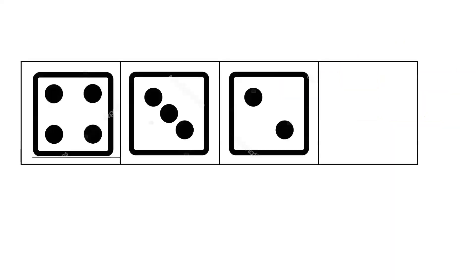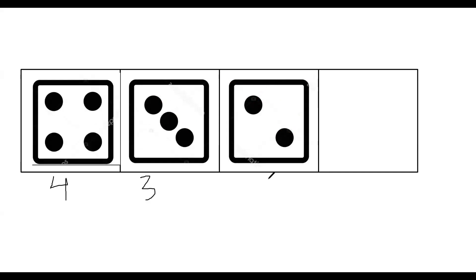Now let us see this new kind of pattern. Have you all played Ludo? In that Ludo we all have a dice. So what is the number on this? The number is four. Then in the next picture of this pattern, what is the number on the dice? It is three. Then what is the number in the next pattern? Two. So this has four dots, this has three dots, this has two dots.